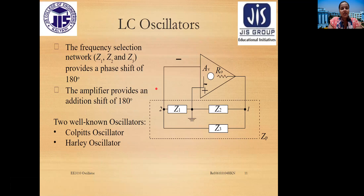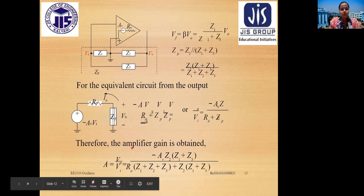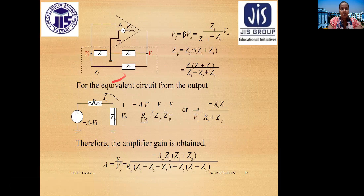The LC oscillator uses a frequency selection network where Z1, Z2, and Z3 provide a phase shift of 180 degrees, and the amplifier provides an additional 180-degree shift. Two well-known LC oscillators are the Colpitts oscillator and the Hartley oscillator.